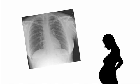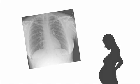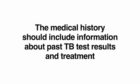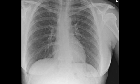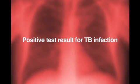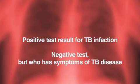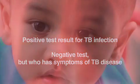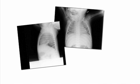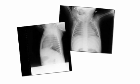Skin tests are safe and reliable for pregnant patients. However, as with any individual, test only if risk factors are present. Get a chest radiograph if the test is positive and use proper shielding. Conduct a physical exam and get a medical history for all patients you're assessing for TB infection. The medical history should include information about past TB test results and treatment. Get a chest radiograph to distinguish between TB infection and TB disease. For children under five, get posterior to anterior and lateral views. For others, a posterior to anterior view is adequate.